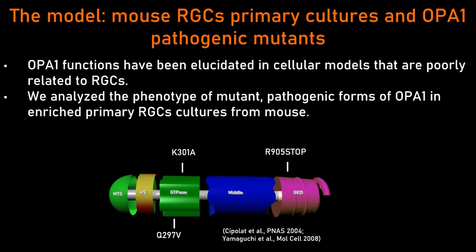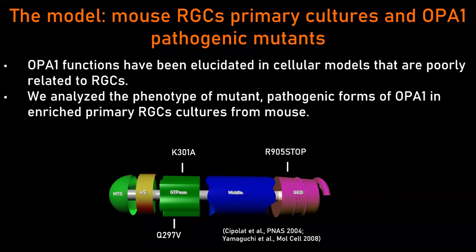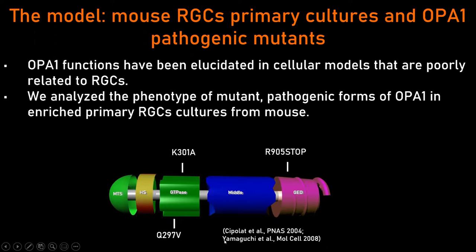This was quite challenging because we do not have cells that can be propagated in culture that faithfully reproduce retinal ganglion cells. We had to devise a system to establish primary retinal ganglion cells from mouse, because we also wanted to use mouse models of gene deletion. We succeeded, and we could proceed by expressing a few mutants of OPA1 previously characterized in our lab and others — K301A in the GTPase domain, R905STOP in the C-terminal coiled-coil domain, plus a control activating mutant described by Yamaguchi.